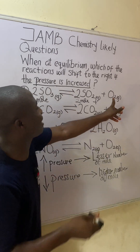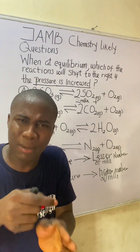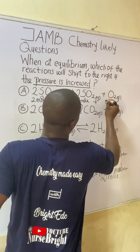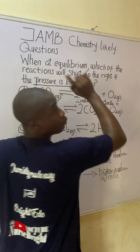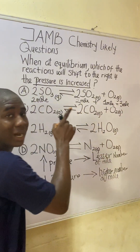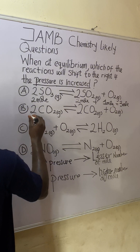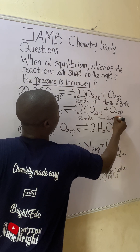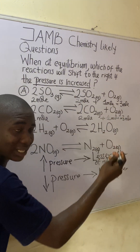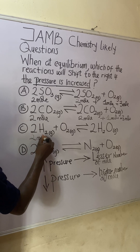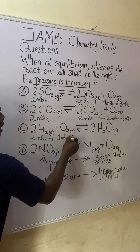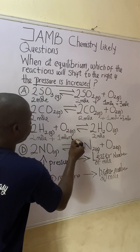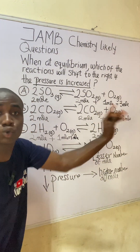Whenever you are not seeing a coefficient in front of a particular element or compound, just know that the invisible coefficient is one. So that becomes one mole. Adding the moles on the product side gives us three moles. For option B, here we have two moles plus two moles on the reactant side giving three moles, and on the product side two moles plus one mole also giving three moles. So for option B, reactant is three moles and product is two moles.